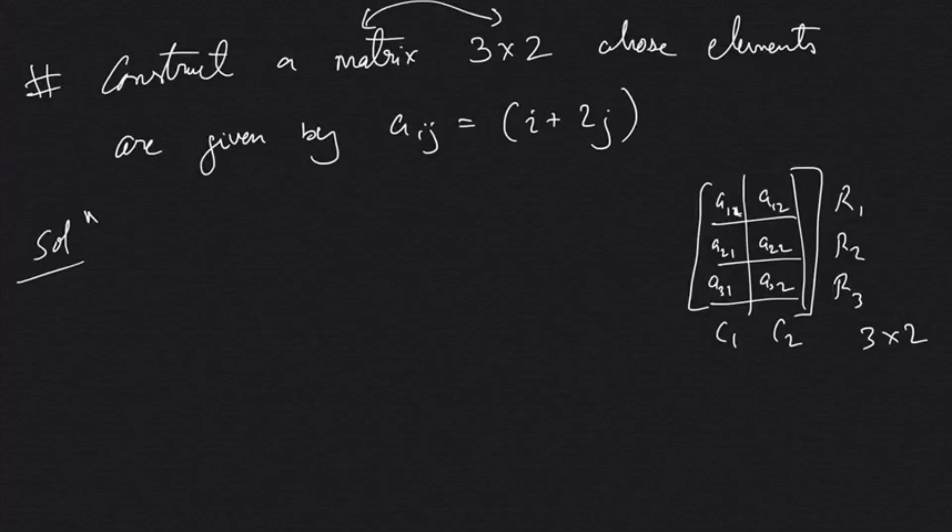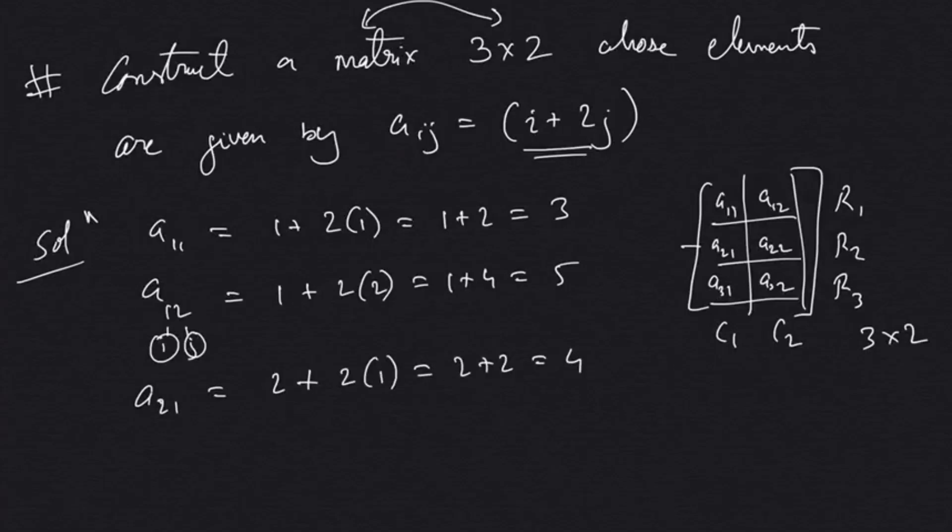Let's find all elements one by one. First element a11 = 1 + 2(1) = 1 + 2 = 3. a12 = 1 + 2(2) = 1 + 4 = 5. a21 = 2 + 2(1) = 2 + 2 = 4. a22 = 2 + 2(2) = 2 + 4 = 6.